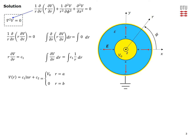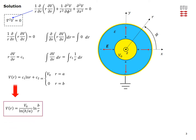This is our potential in the dielectric, with two integration constants to be determined by the boundary conditions. The potential must equal V0 at the surface of the inner conductor where r equals A, and must equal zero at the outer conductor where r equals B. This gives two equations with two unknowns to determine C1 and C2, leading to the derived expression for the potential at any point in the dielectric.